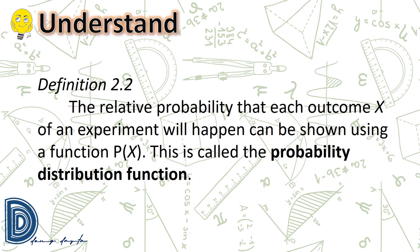The relative probability that each outcome x of an experiment will happen can be shown using a function p(x). This is called the probability distribution function.